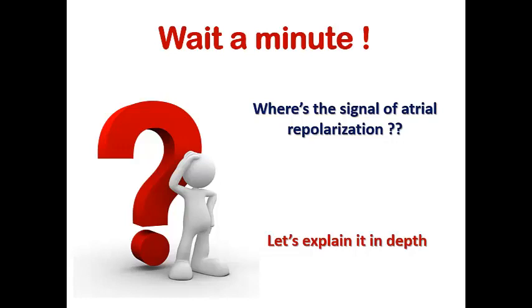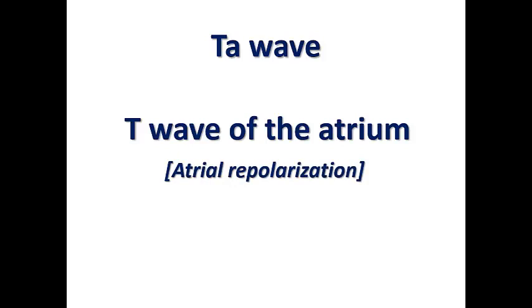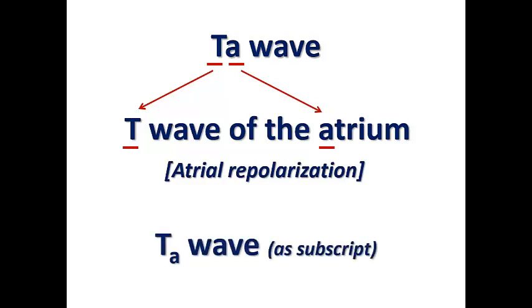Let's omit that simple answer for a while and explain it in depth. We don't have only those three waves — we also have another wave representing atrial repolarization called the TA wave. The TA wave is called by this name because it is like the T wave of the atrium. If the T wave represents ventricular repolarization, then the T wave of the atrium represents atrial repolarization. The 'T' stands for T wave and the 'A' stands for atrium. It can also be written with the letter 'A' as a subscript — both ways of writing TA wave are correct.